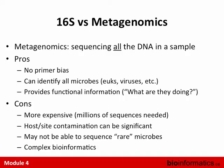Another con of metagenomics is that you may not be able to sequence rare microbes. Since you're sequencing all the DNA, unless you're doing very deep sequencing you may not sample microbes that aren't dominant. With 16S you're targeting a single gene, so you get more depth per gene. Also the bioinformatics tends to be more complicated with metagenomics — it's a bit of a wild west — but there are also more fun things you can do with it.